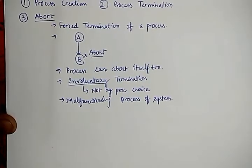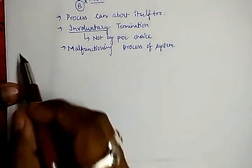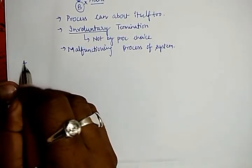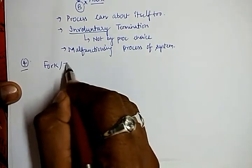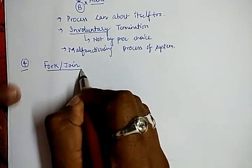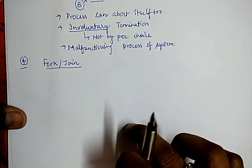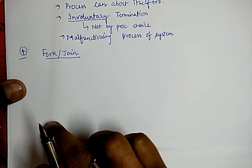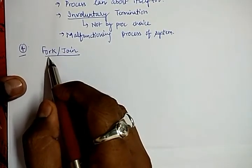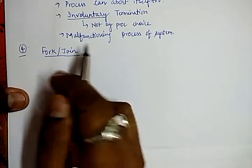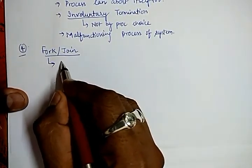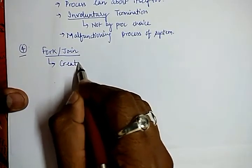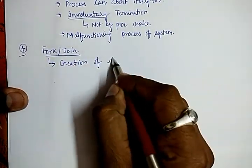After the abort, the next service which is offered by operating system is called as fork/join. So this service is a combination of two system calls: first is fork and second is join. As we know, fork is used for the creation of child process.